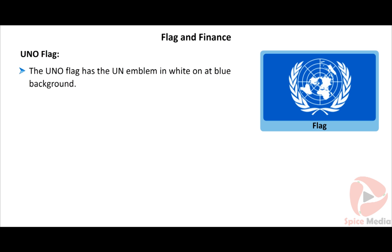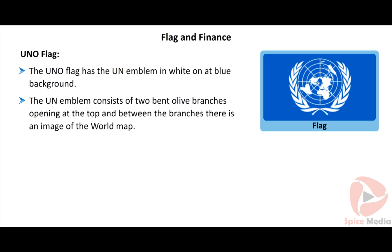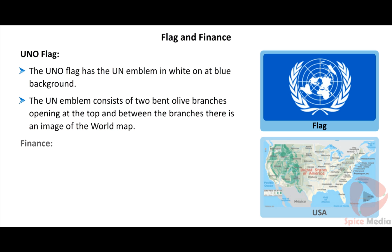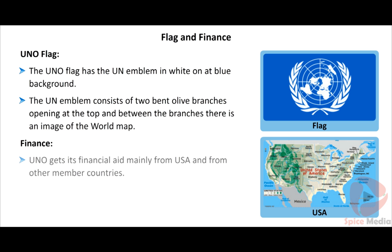The UN emblem consists of two bent olive branches opening at the top, and between the branches there is an image of the world map. The UNO gets its financial aid mainly from the USA and from other member countries.